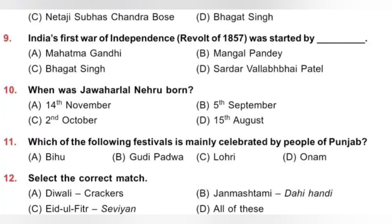Question 10: When was Jawaharlal Nehru born? Options: A. 14th November, B. 5th September, C. 2nd October, D. 15th August. Jawaharlal Nehru's birthday is celebrated as Children's Day, that is 14th November. He was born in 1889 and is also known as Chacha Nehru. Option A, 14th November, is the correct answer.